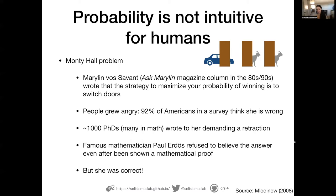People grew very angry about this. There was a survey where 92% of Americans thought she was wrong. Over a thousand PhDs wrote to her demanding she retract her answer because she clearly did not understand probabilities — many of these PhDs were in math. The mathematician Paul Erdős refused to believe the answer even after being shown a mathematical proof. But she was correct. Her solution was right; it was just not intuitive for 92% of people, over a thousand PhDs, and even famous mathematicians.